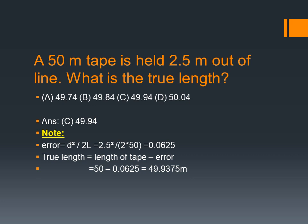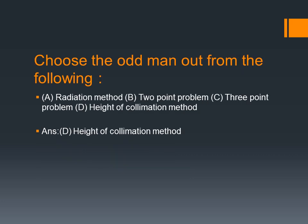Next question: choose the odd man out from the following — radiation method, 2-point problem, 3-point problem, height of collimation method. Radiation method, 2-point problem, and 3-point problem are all related to plane table survey.